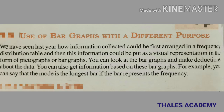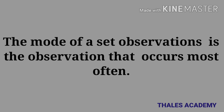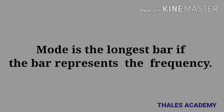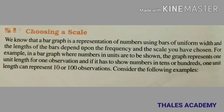You can also get information based on bar graphs. As we know, the mode of a set of observations is the observation that occurs most often, so we can say that the mode is the longest bar if the bar represents a frequency. Choosing a scale: a bar graph is a representation of numbers using bars of uniform width, and the length of the bars depends upon the frequency and the scale chosen. For example, in a bar graph where numbers in units are to be shown, one unit length represents one observation, and if it has to show numbers in tens or hundreds, one unit length can represent ten or a hundred observations.